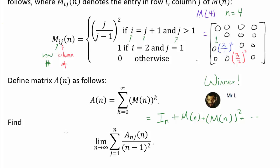Now, we wish to find the limit as N goes to infinity of the sum from J equals 1 to N of A sub NJ of N, divided by (N minus 1) squared. So we're adding up every entry in row N and dividing by (N minus 1) squared.